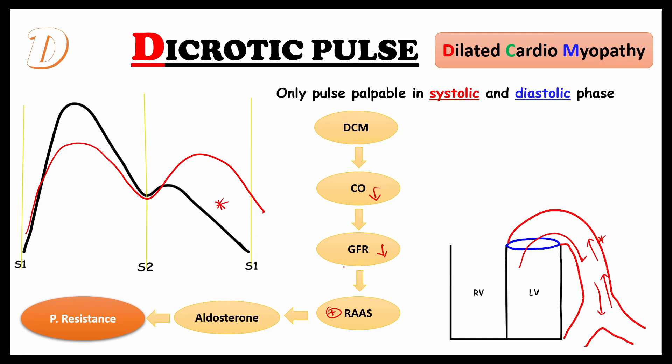The dicrotic pulse is palpable in both the systolic and diastolic phases. We can see twice-beating pulse in both bisferiens and dicrotic pulses, but the key difference is that bisferiens pulse has twice-beating only in the systolic phase, whereas dicrotic pulse has twice-beating in both the systolic and diastolic phases.